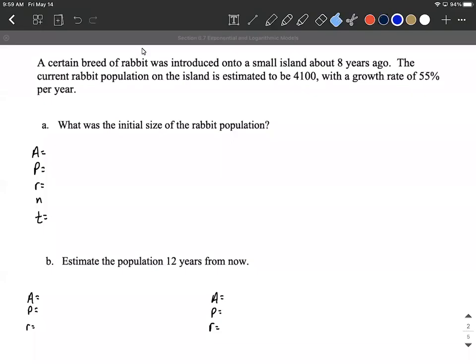Rabbit populations. A certain breed of rabbit was introduced onto a small island about eight years ago. The current rabbit population on the island is estimated to be 4100 with a growth rate of 55 percent per year.